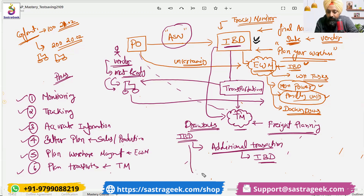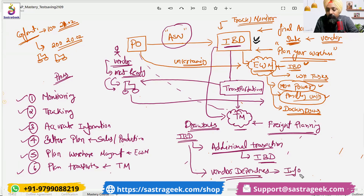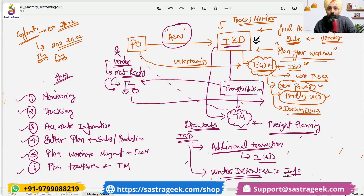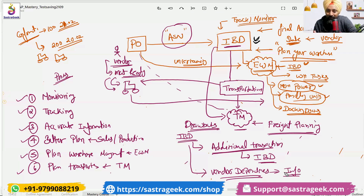We also have vendor dependency — the vendor needs to provide the information. If the vendor is not giving you information, or there is no proper communication channel, or the vendor is not providing proper information about when the material is ready for dispatch, then how will you create the IBD?